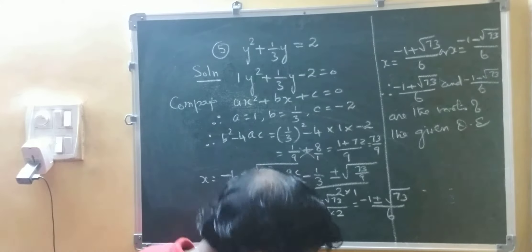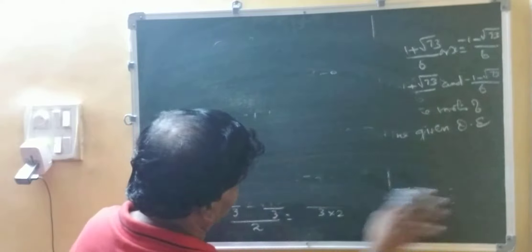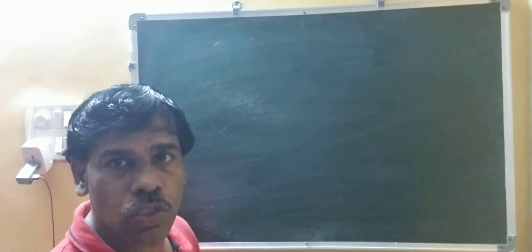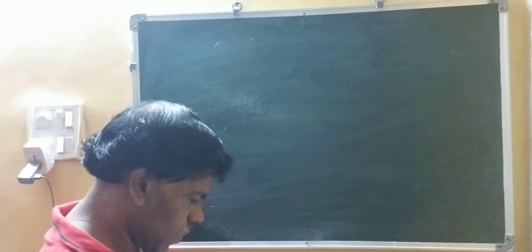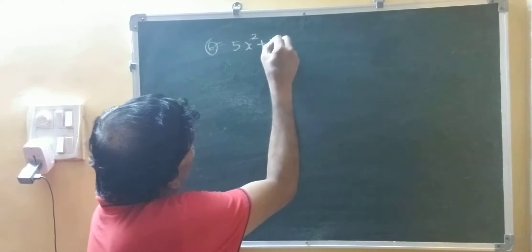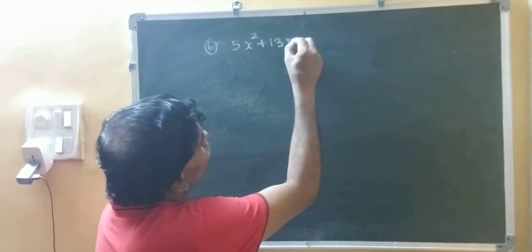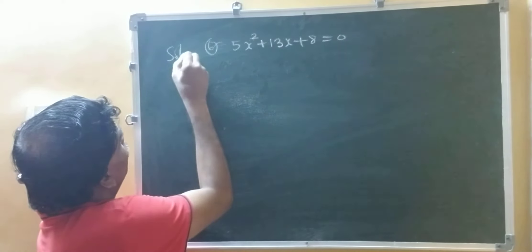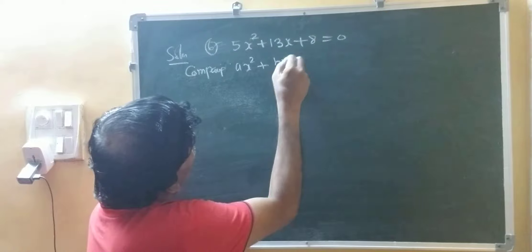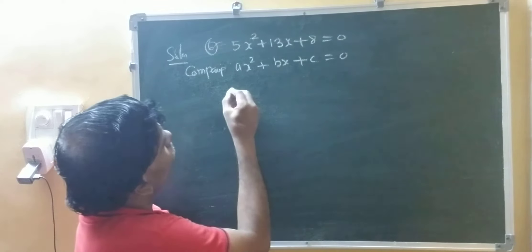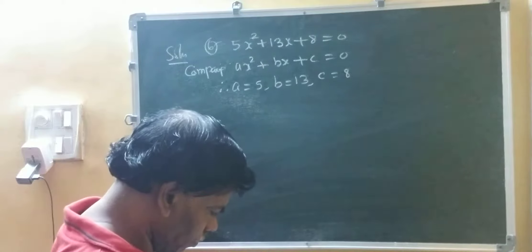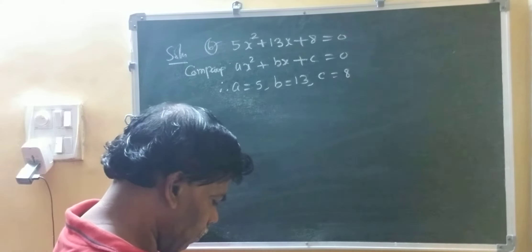This is very simple. Now one more sum — the sixth sum: 5x squared plus 13x plus 8 is equal to 0. Solution — comparing with ax squared plus bx plus c equals 0, therefore a equals 5, b equals 13, c equals 8.